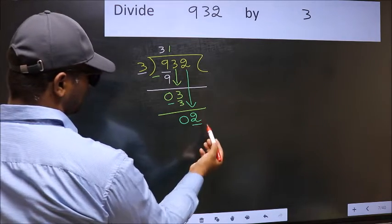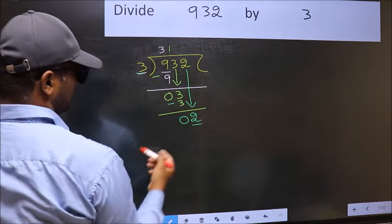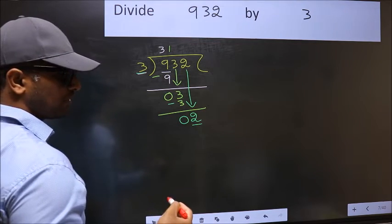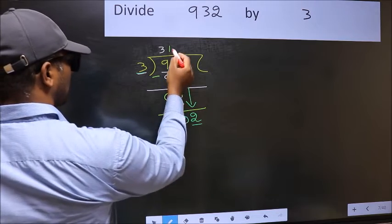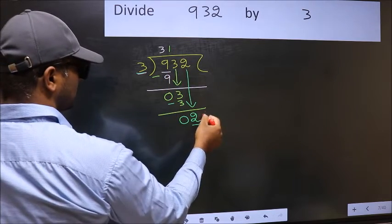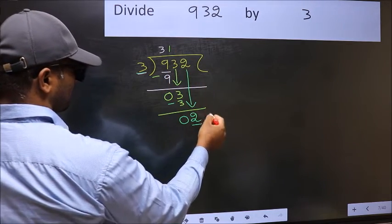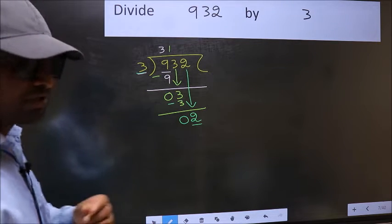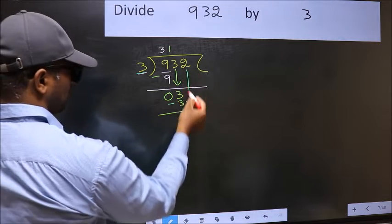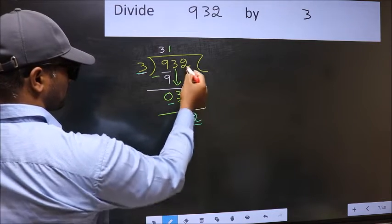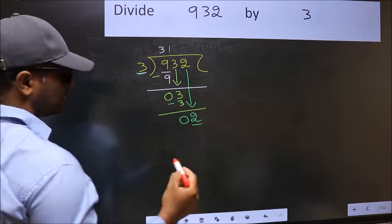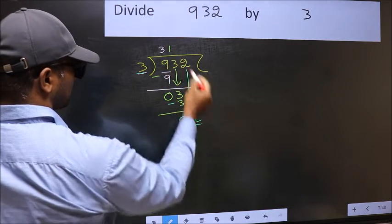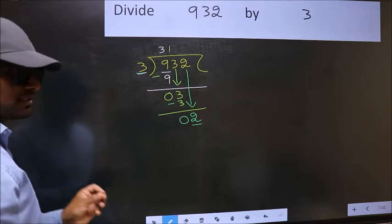Here we have 2 and here 3. 2 is smaller than 3. So, what many do is they directly put a dot and take 0, which is wrong. Why is it wrong? Because just now you brought this number down, and in the same step you want to put a dot and take 0, which is wrong.